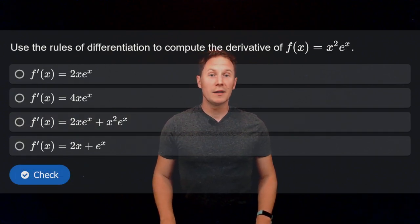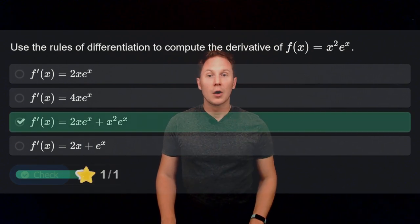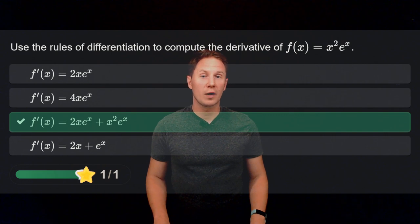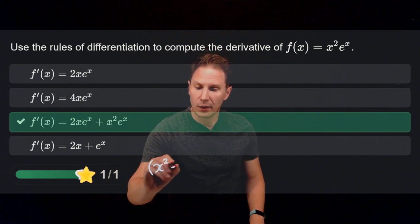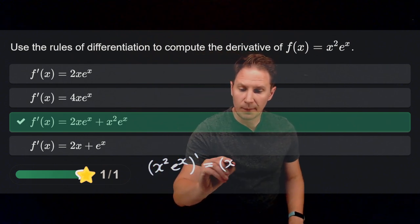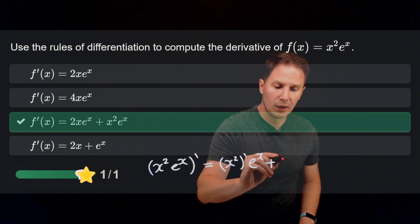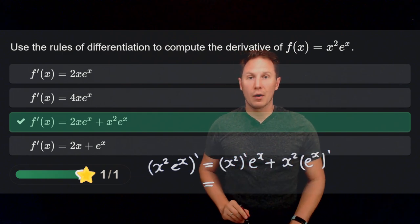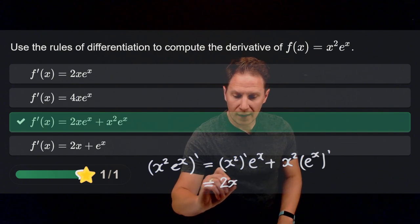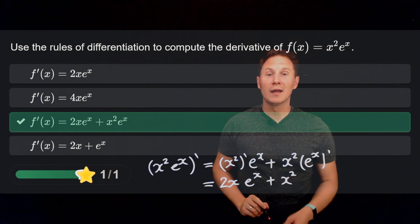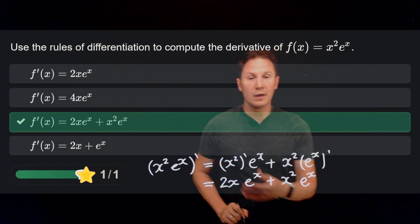Use the rules of differentiation to compute the derivative of f of x equals x squared times e to the x. The derivative is 2x times e to the x plus x squared times e to the x. We obtain this by first applying the product rule, since this is the derivative of a product: the derivative of the first factor times the second factor, plus the first factor times the derivative of the second factor. Then we use the power rule with n equals 2 to get the derivative of x squared as 2x, multiplied by e to the x, plus x squared times the derivative of e to the x — which, according to a basic derivative, is itself.